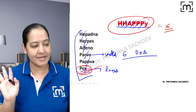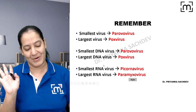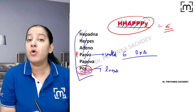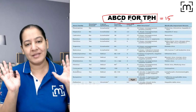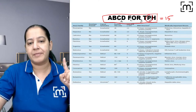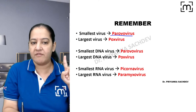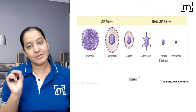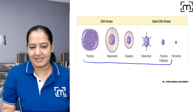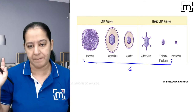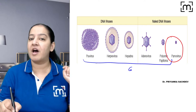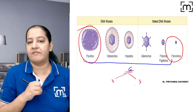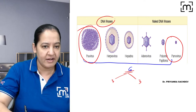Among the DNA viruses, the smallest is Parvo and the largest is Pox — both are P. Among RNA viruses, both smallest and largest are also P. Among DNA: smallest is Parvo, largest is Pox. Among RNA: smallest is Picorna and largest is Paramyxo. It's all about P, and very confusing — so it should be crystal clear in your mind.